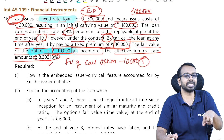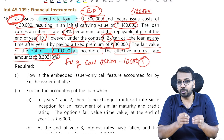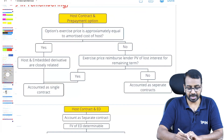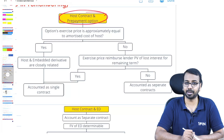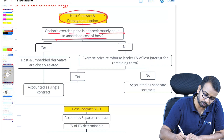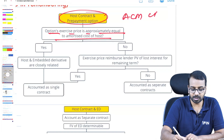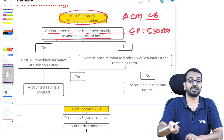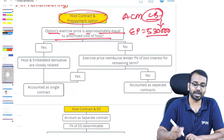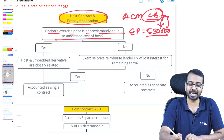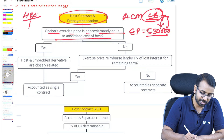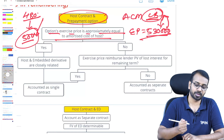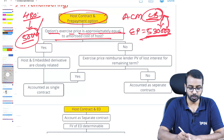This is a financial liability. If it were a financial asset, it would be simple and straightforward, but here it is a liability. We need to decide: do we separate or keep them as a single contract? First, check whether the option exercise price is approximately equal to the amortized cost of the host. The exercise price is not 30,000 — it is 5,30,000, because that is what you pay to prepay. The opening balance is 480,000 and maximum closing balance will be 5,00,000, so the exercise price is not approximately equal to the amortized cost.